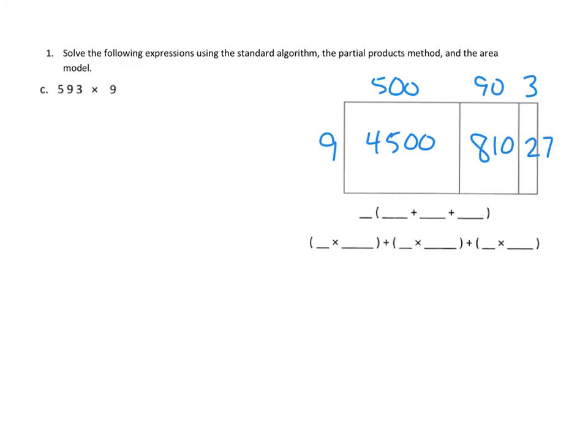We can write that below this. They've given us a kind of mathematical sentence frame. We can say that this is the same as 9 times, and then we'd add up the partials, 500 plus 90 plus 3. If we did it that way, we could distribute our multiplication. We could say this is the same as 9 times 500 plus 9 times 90 plus 9 times 3.